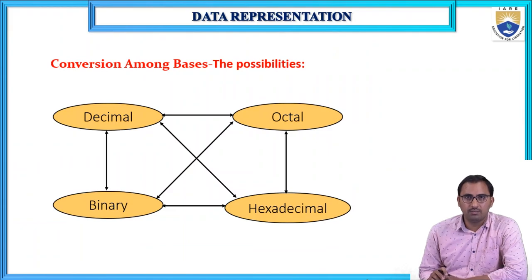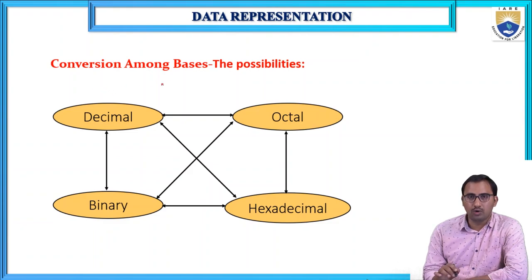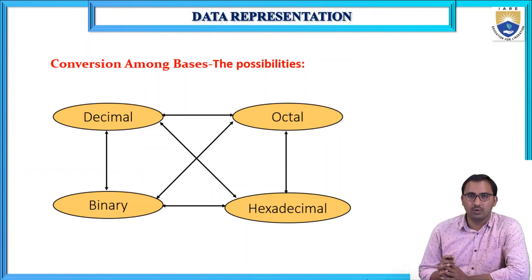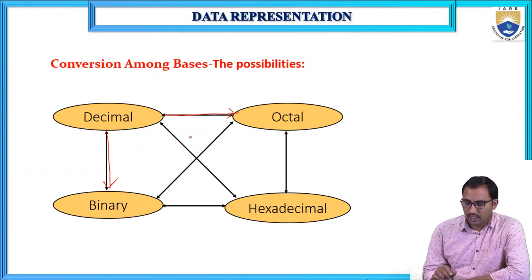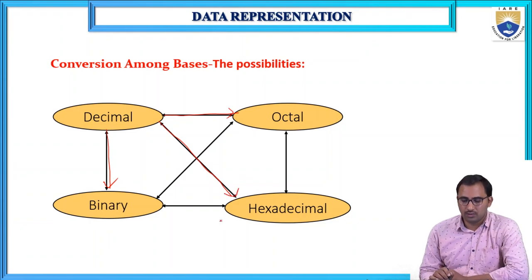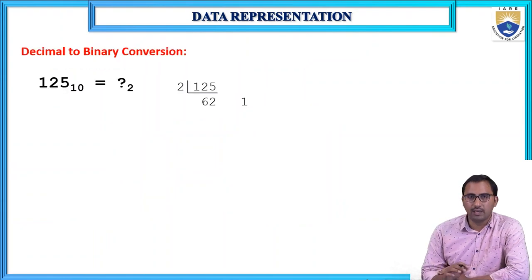Now we have seen the different number systems. Using these, we can convert from one number system to another. From the decimal number system, we can convert to octal, binary, or hexadecimal. Let us see some examples of number system conversions.